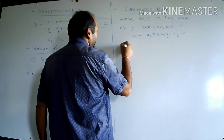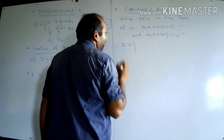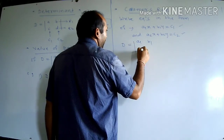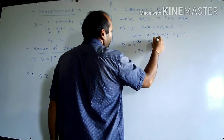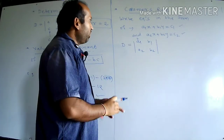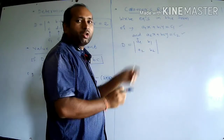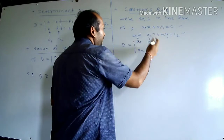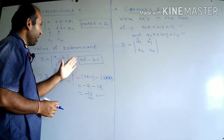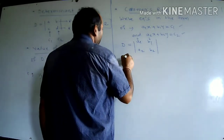Then find determinant D: in the first column write the coefficients of X (A1, A2), and in the second column write the coefficients of Y (B1, B2). Find its value using the formula AD minus BC.